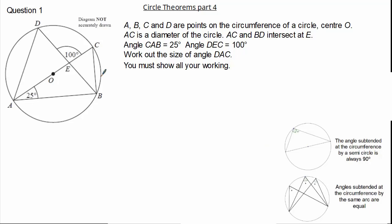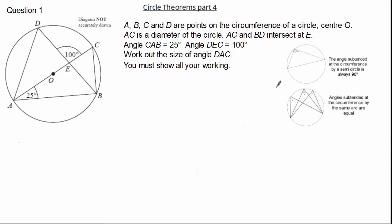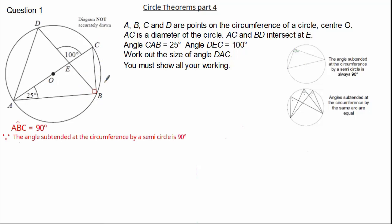Therefore we have two remaining circle theorems that we could potentially use in this question. Reading the question you might notice we have a diameter. Therefore angle ABC is 90 degrees. This is because the angle subtended at the circumference by a semicircle is always 90 degrees.